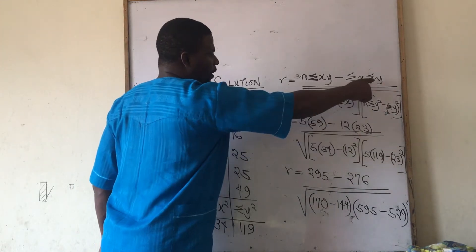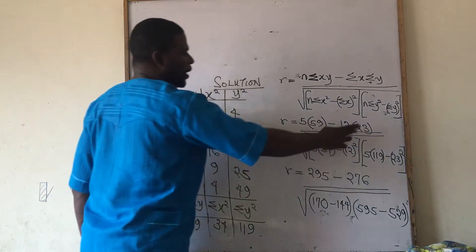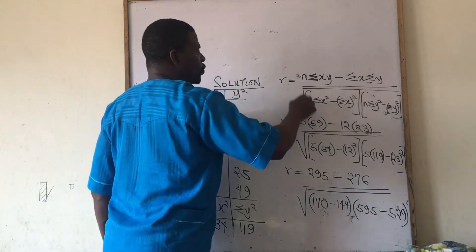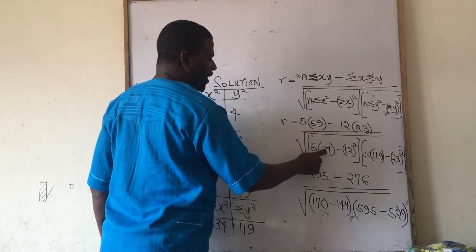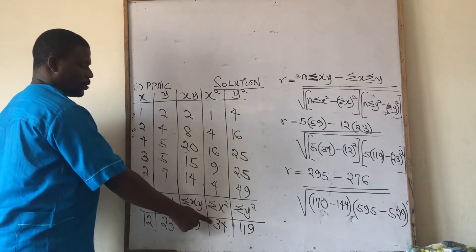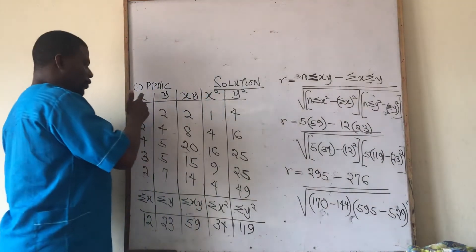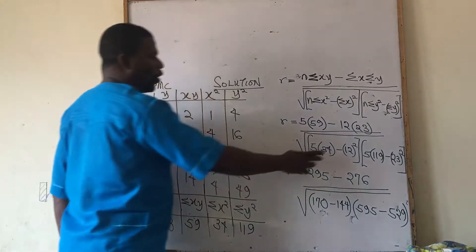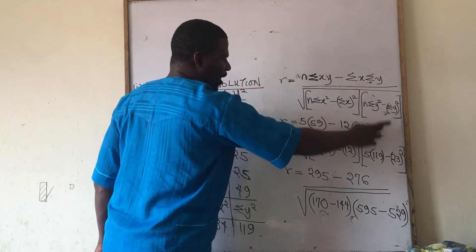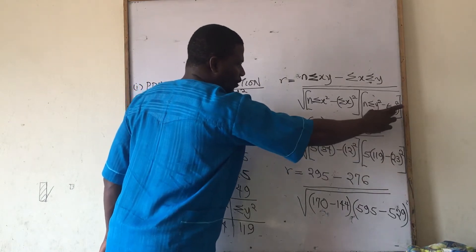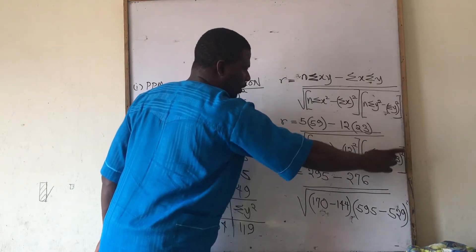Summation y is 23, placed in the formula. Over the square root of n=5, summation x² is 34 from the table, minus summation x (which is 12) all squared. Then n=5, summation y² is 119, minus summation y all squared.